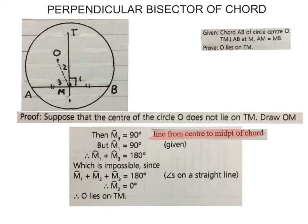Therefore, O lies on TM. This theorem is not for the faint of heart. In other words, you're contradicting yourself, but this is how it works. You first make a wrong statement, saying that O is not on the line. Then you prove that you made a wrong statement — O is on the line. That's how this theorem works.